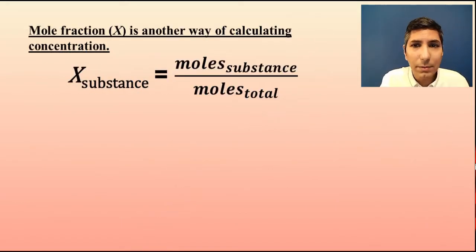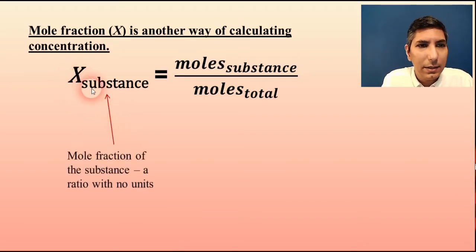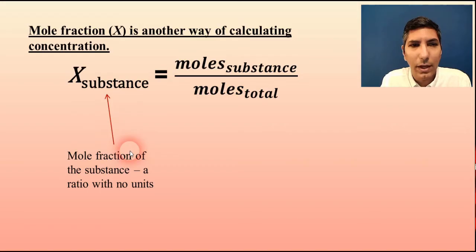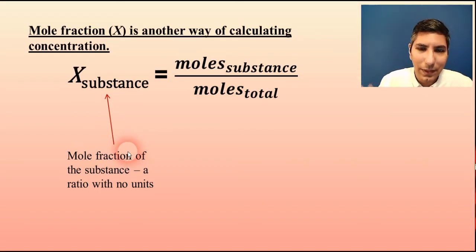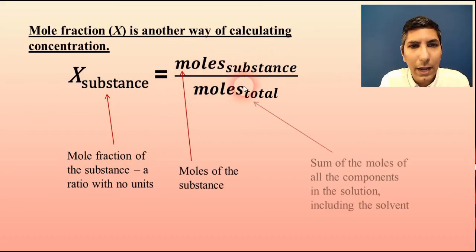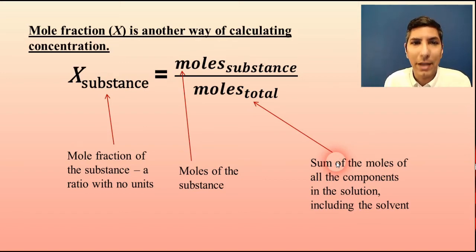We've talked about molarity already, so let's look at mole fraction — another way of talking about concentration. X represents the mole fraction, which we also saw in the Dalton's Law of Partial Pressure section. It's a ratio with no units, which is nice. The moles of the substance go in the numerator, and the total moles — the sum of all moles of all components in the solution, including the solvent — go in the denominator.